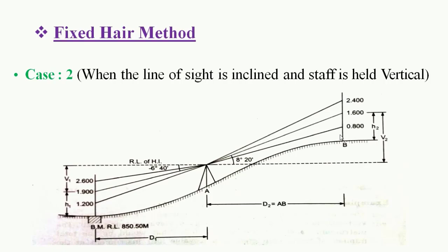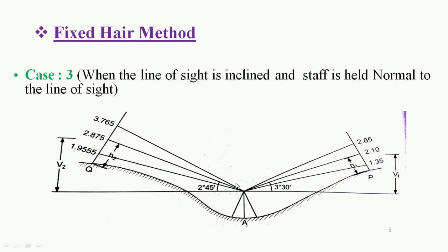Case number three is when the line of sight is inclined, just like case two, but the staff is held normal to the line of sight rather than vertically. The line of sight is inclined at certain degrees — for example, 2 degrees 45 minutes and 3 degrees 30 minutes at the respective stations. h1 and h2 are the distances between the middle crosshair reading and the bottom of the staff, while v1 and v2 are the vertical distances between the middle crosshair reading and the horizontal line of sight.